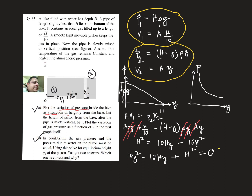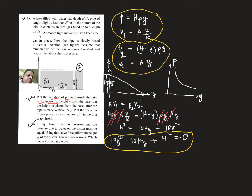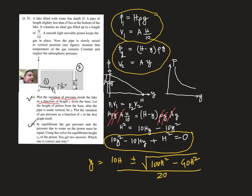Solving this quadratic equation, y equals (10h ± √(100h² - 40h²)) / 20. The plus sign is not acceptable because that value of y would be greater than h, which is physically impossible. Therefore the correct value of y-naught uses the minus sign, giving the valid equilibrium height.